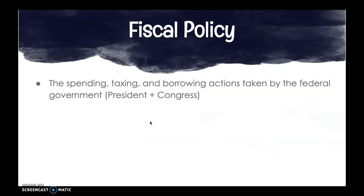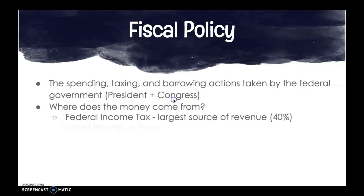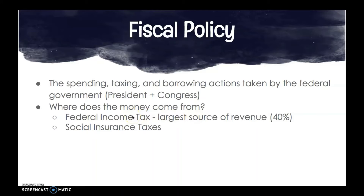Fiscal policy is the spending, taxing, and borrowing actions taken by the federal government — whether that's the president or Congress. This money comes from several places. The first is the federal income tax, where we get almost 40% of our total revenue — our largest source. This is a progressive tax, meaning the higher the income and ability to pay, the higher the tax rate. This applies to individuals and corporations.